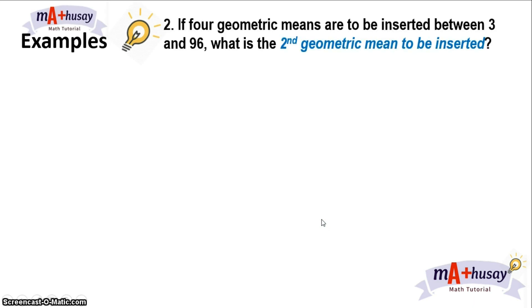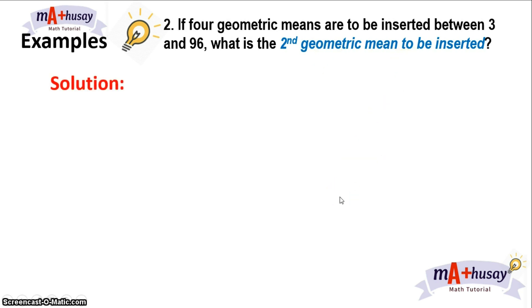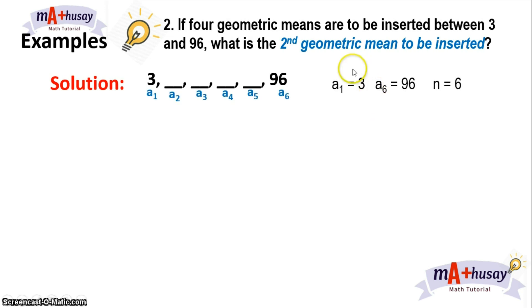Let's take example number 2. If four geometric means are to be inserted between 3 and 96, what is the second geometric mean to be inserted? We know that in this problem we have 6 terms in the given sequence, where the first term is 3, the last term is 96, and the number of terms is 6.